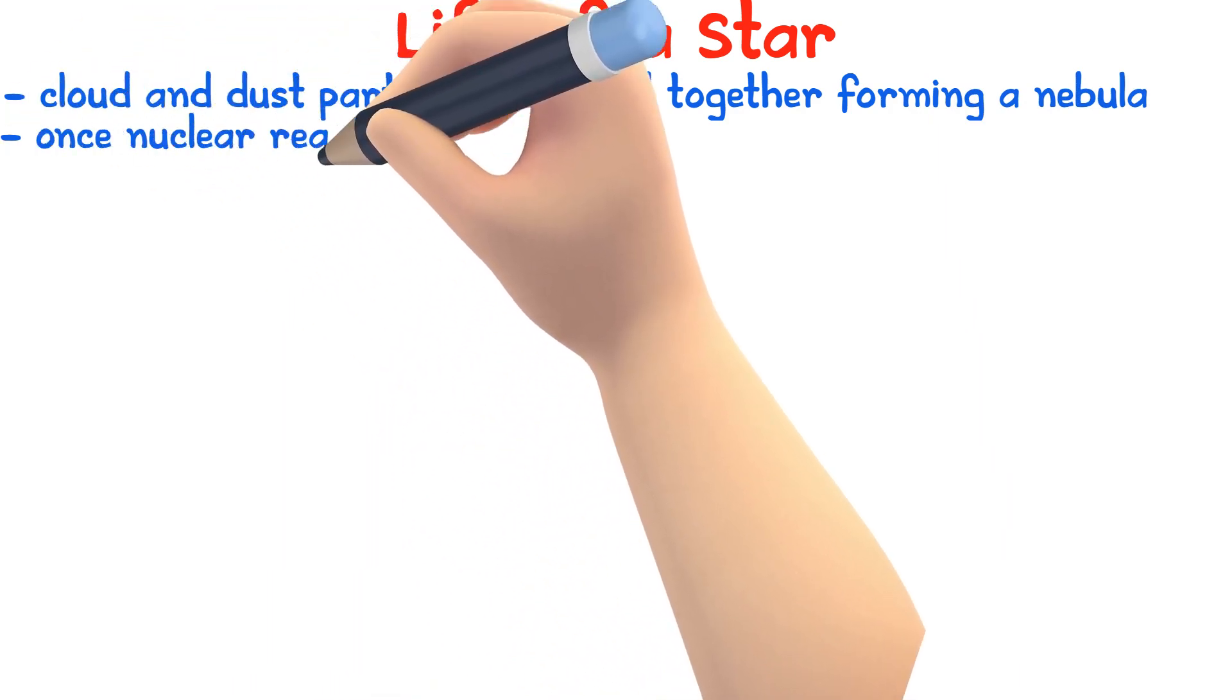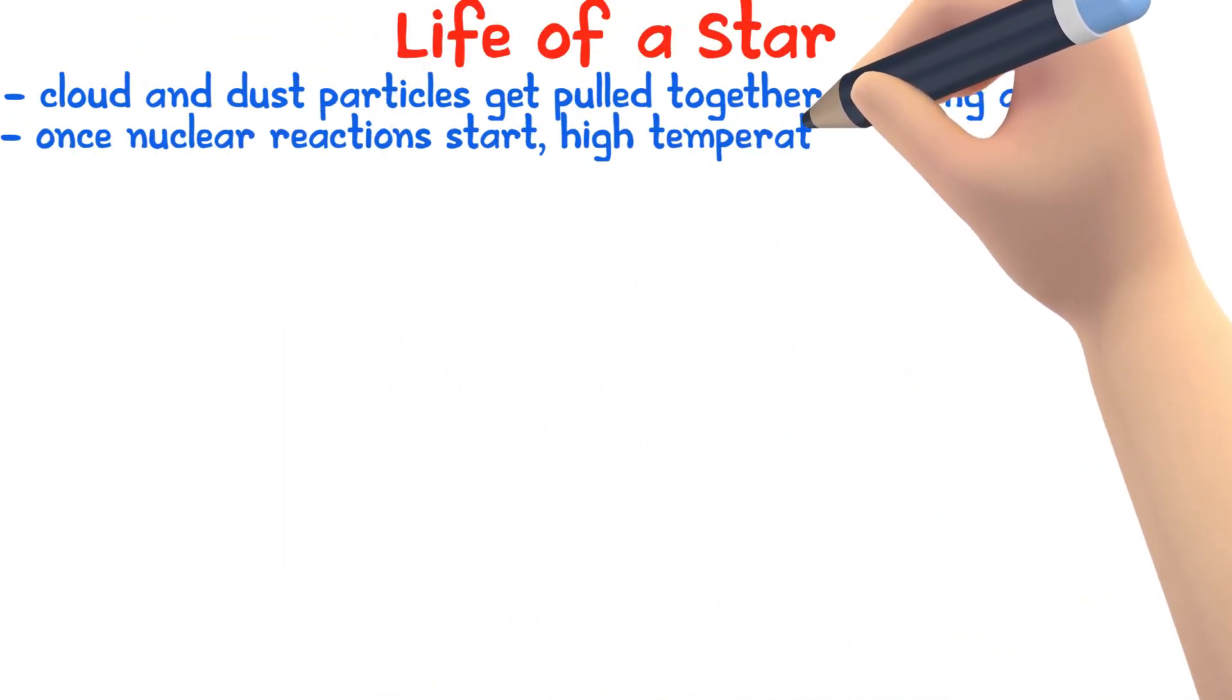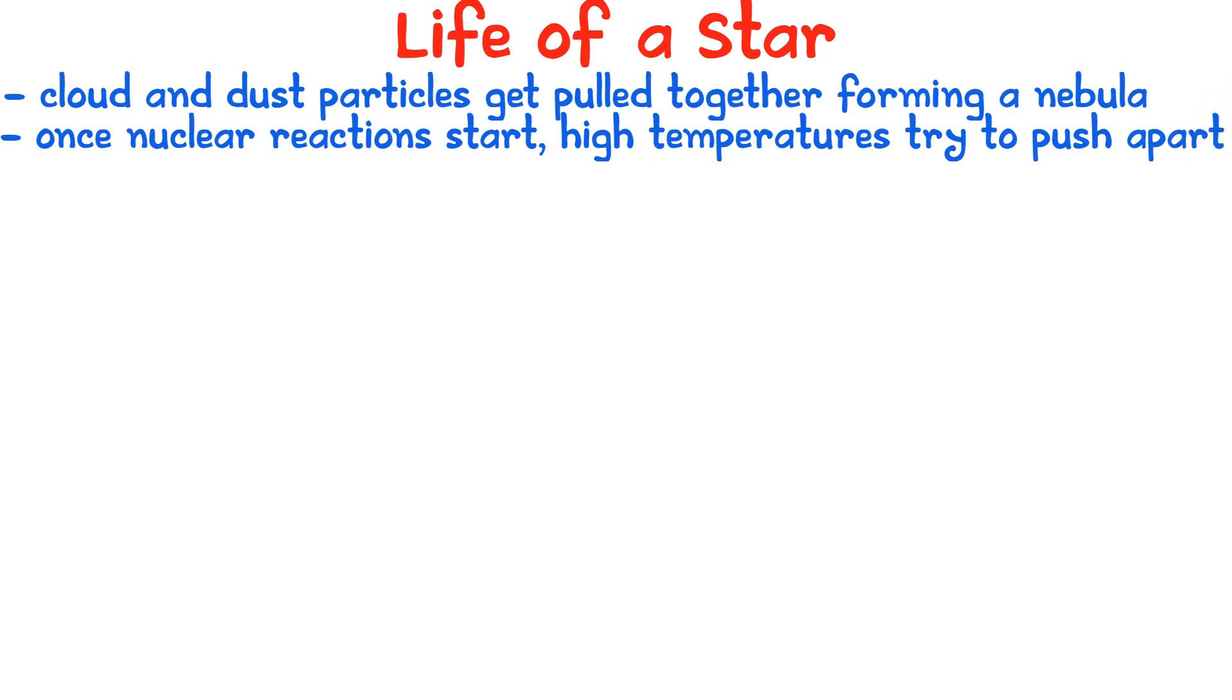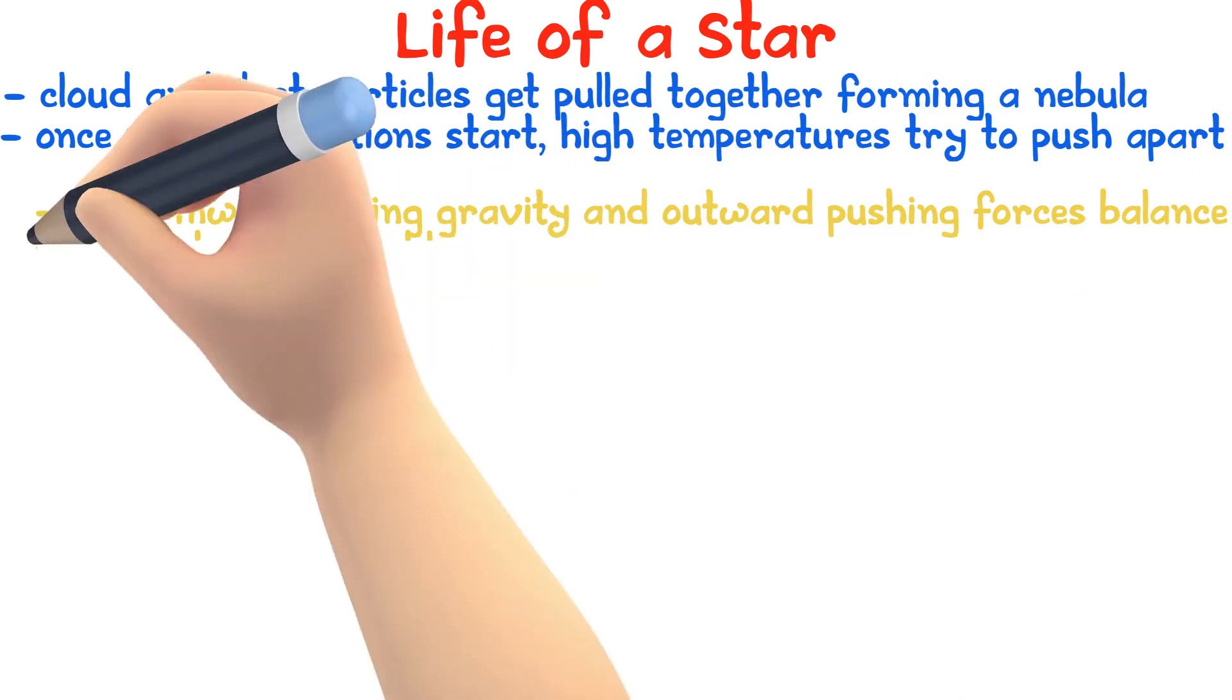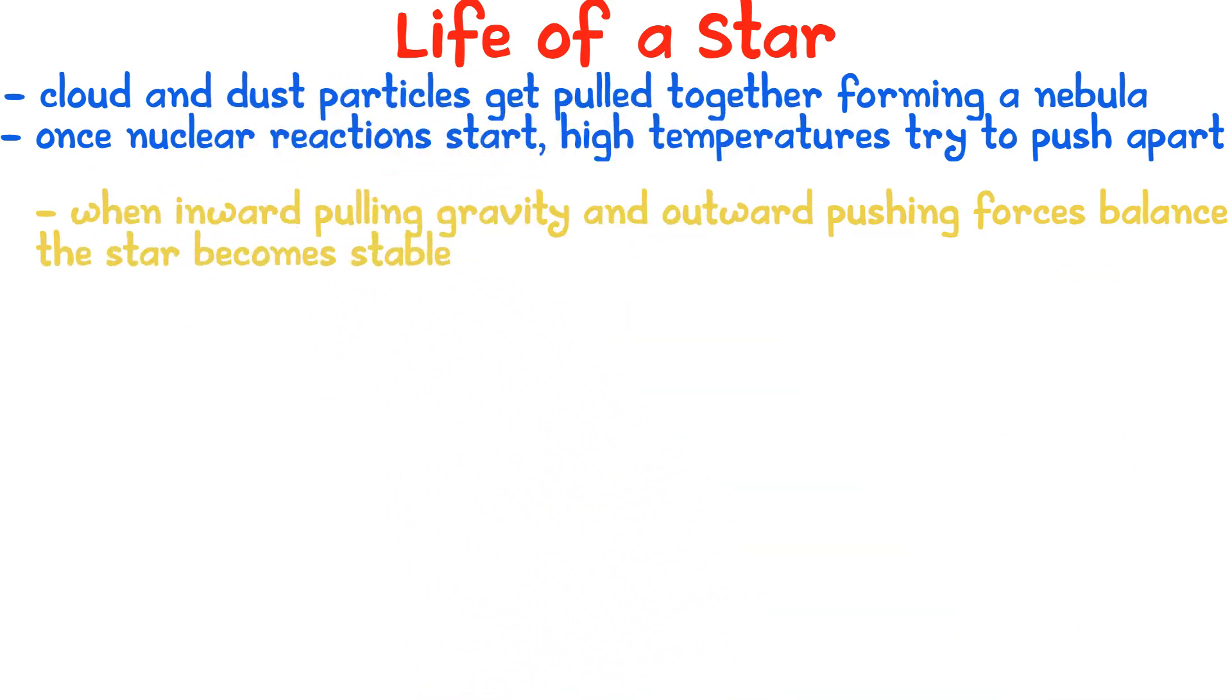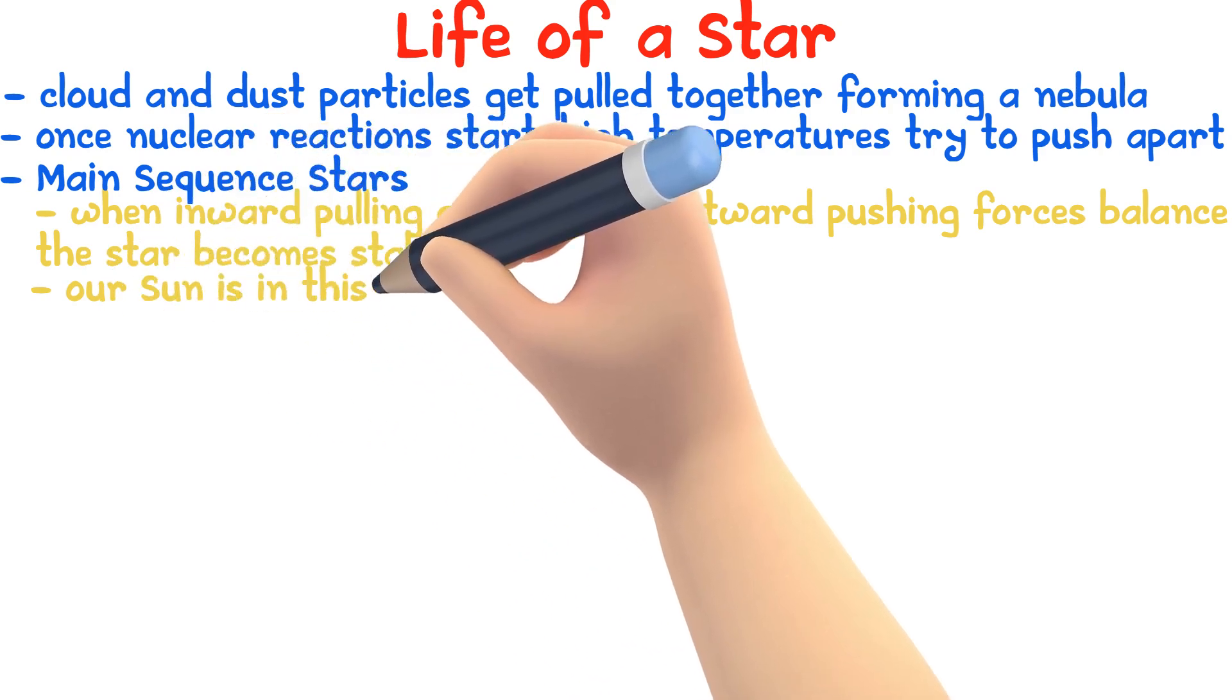When nuclear reactions start, the high temperatures try to push the particles apart. When the inward-pulling gravitational forces and the outward-pushing forces are balanced, the star becomes stable and is known as a main sequence star. Our Sun is in this period now.